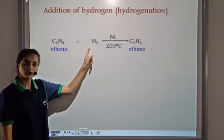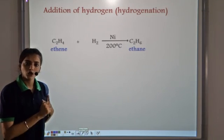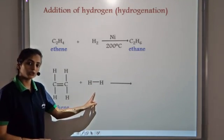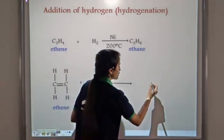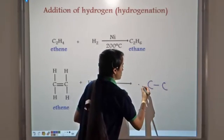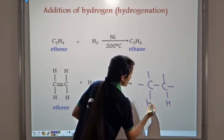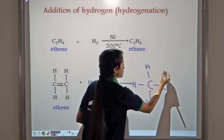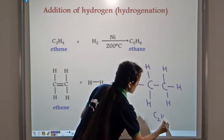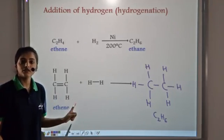When ethene reacts with hydrogen in the presence of a catalyst — nickel — at 200°C, it forms ethane. This is the same addition reaction: the double bond changes into a single bond and the hydrogen atoms attach themselves to the carbon atoms. So from ethene we get ethane by the addition reaction.